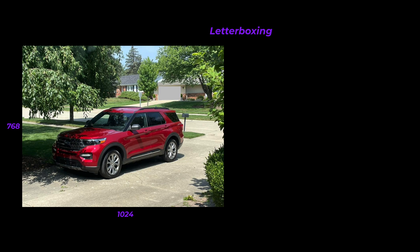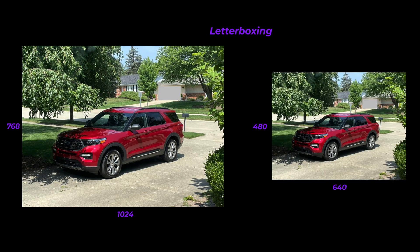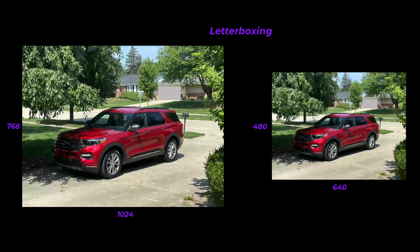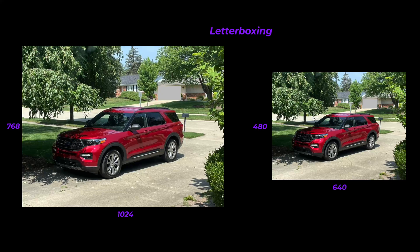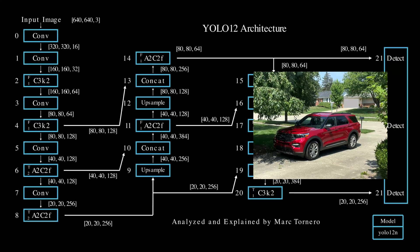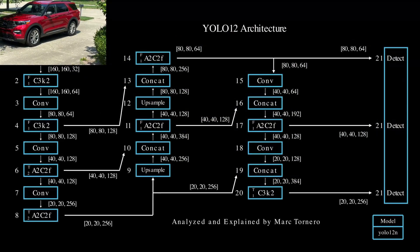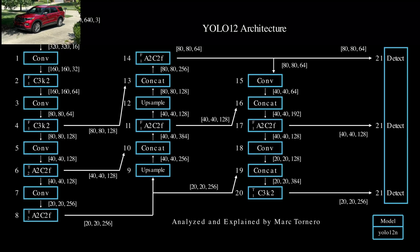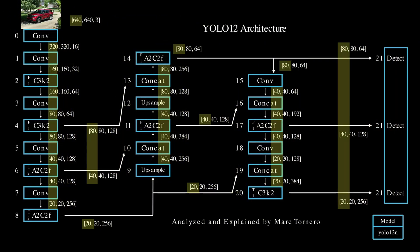A pre-processing step called letterboxing resizes it to 480 by 640 height by width while preserving the aspect ratio. This resized image is what actually goes into the neural network. If you're curious how letterboxing works, I covered that in my YOLO11 series and the steps are exactly the same. So in this case the input image shape becomes 480 by 640 by 3 and the corresponding tensor dimensions throughout the model will adjust accordingly.